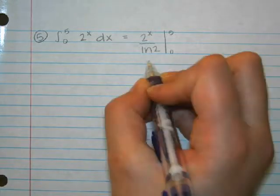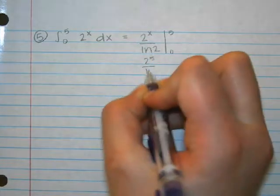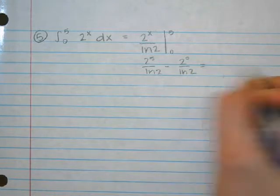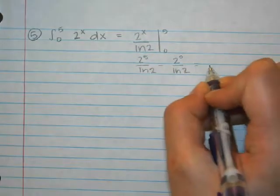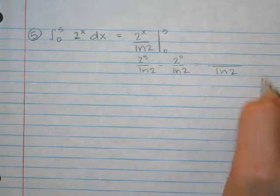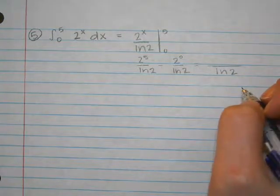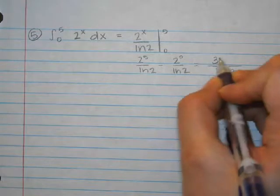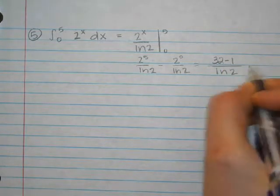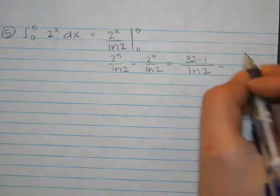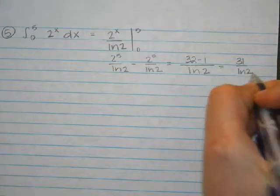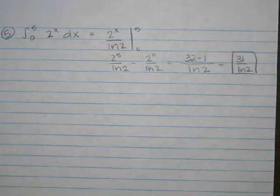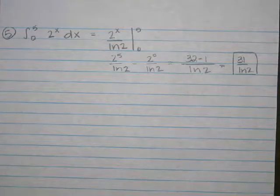So that's going to be 2 to the 5th over ln 2 minus 2 to the 0 over ln 2. So we do have a common denominator of ln 2, right? And 2 to the 5th is? 32. And 2 to the 0 is 1. And so our result is 31 over ln 2. Yep, that's the exact answer. You could type it in and get the decimal if you wanted the decimal answer.